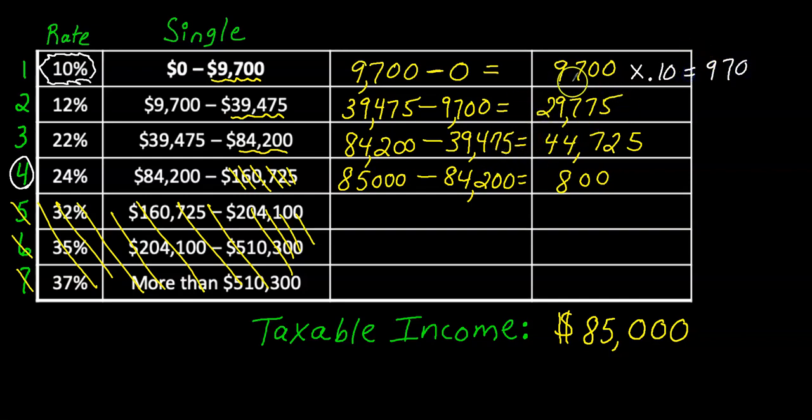And now I'll do the same thing here. I'll multiply it by this tax rate, 12%. So for this portion of the money, I have to pay a 12% rate. And that's going to give us, I did this, it's going to be $3,573.